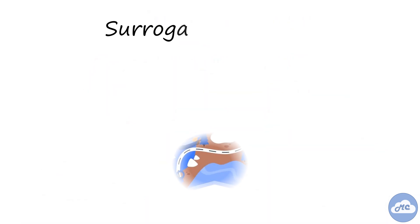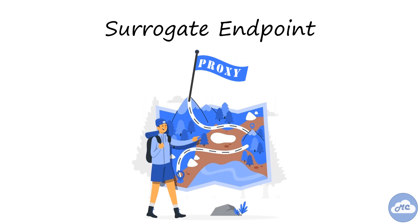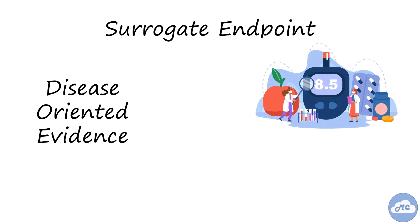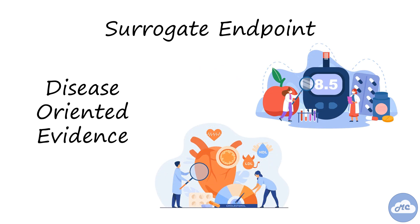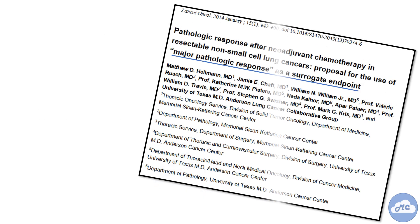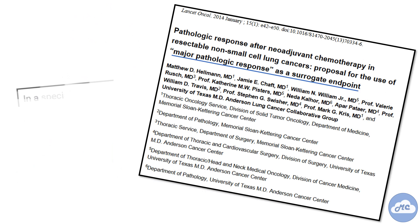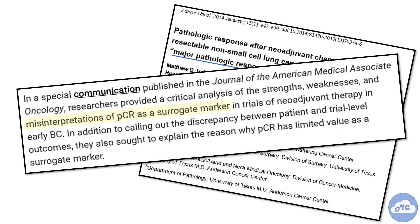Surrogate endpoints are a substitute or proxy measure for a clinical outcome. These are typically disease-oriented, such as hemoglobin A1C or cholesterol levels. Studies that use surrogate markers are quick and less expensive to conduct. However, the results may be misinterpreted and they may not always predict clinical benefit.